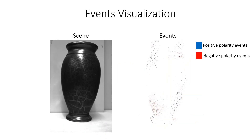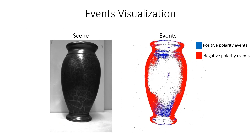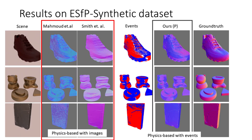The events arising due to the change in intensity are visualized here. We show the results of this baseline on our synthetic dataset and compare against other physics-based approaches. Exploiting the continuous stream of events acquired when observing the polarized light, our geometry-based approach outperforms other physics-based methods using images by 14% in angular error.